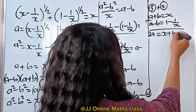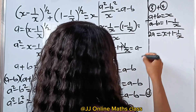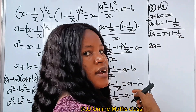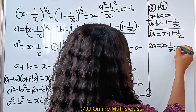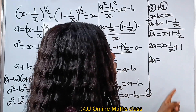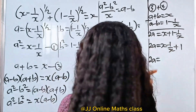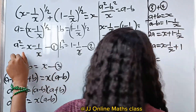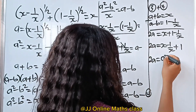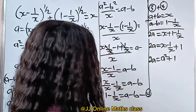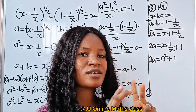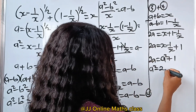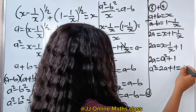So 2a equals x plus 1 minus 1 over x. Let's bring minus 1 over x to this side, giving 2a equals x minus 1 over x plus 1. Recall that x minus 1 over x equals a squared, so we substitute that: 2a equals a squared plus 1. Rearranging, we get the quadratic equation a squared minus 2a plus 1 equals 0.